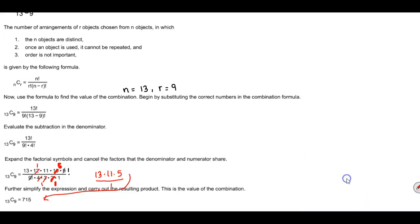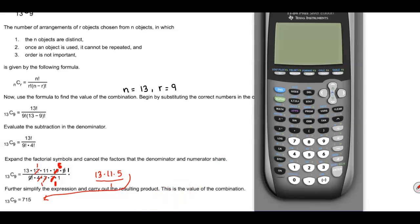Now if we want to do this on a calculator, let's go ahead and pull that up here. So in order to find the combination we can select math. We're going to scroll to the right where you see PRB which represents probability. If you go down to number 3, you can see that we have C which represents the combination.